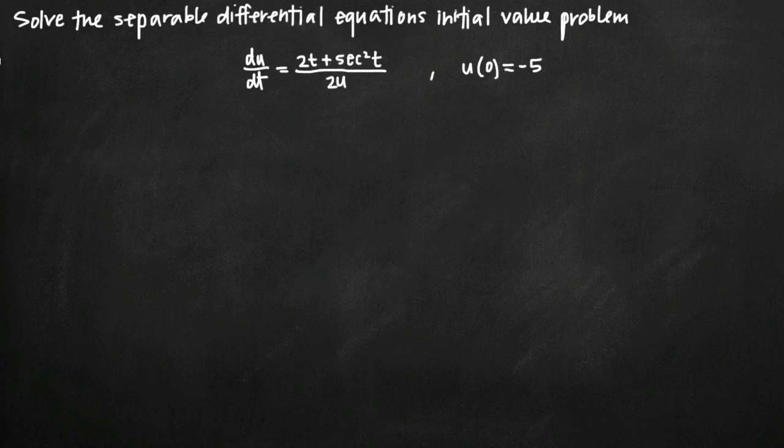Today we're going to talk about how to solve a separable differential equation initial value problem. In this problem we've been given the differential equation du/dt equals (2t + sec²t)/2u and the initial condition u(0) = -5.